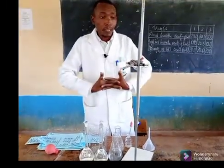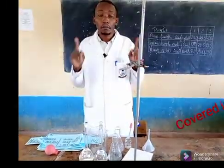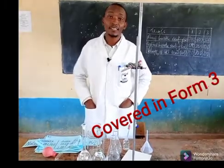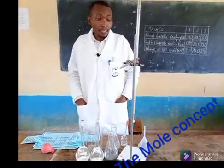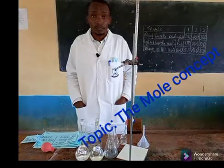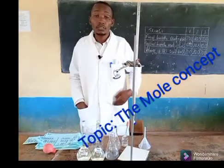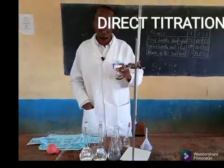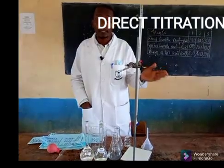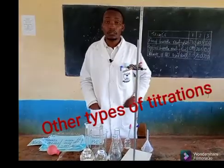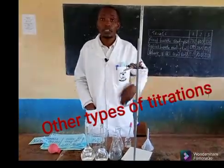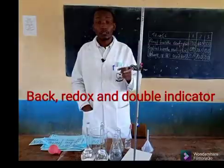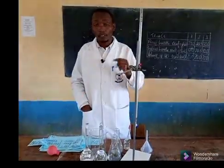For today we are doing something covered in Book 3, that is Form 3 in the Kenyan system of education, and that is a process called titration. We are going to do direct titration. Remember we have other types: back titration, redox titration, and double indicator titration. But we are doing a very simple titration process — direct titration.